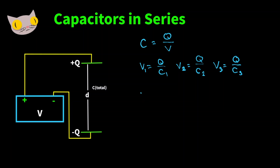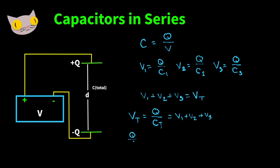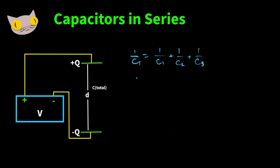The total voltage is the sum of the individual voltages. So we can write Vt, our total voltage, as Q over CT, our total capacitance, and that equals the sum of the three voltages. From this we get Q over total capacitance equals Q over C1 plus Q over C2 plus Q over C3. Canceling out the Q's, we're left with 1 over the total capacitance equals 1 over C1 plus 1 over C2 plus 1 over C3. That's the equation for the total capacitance in series.